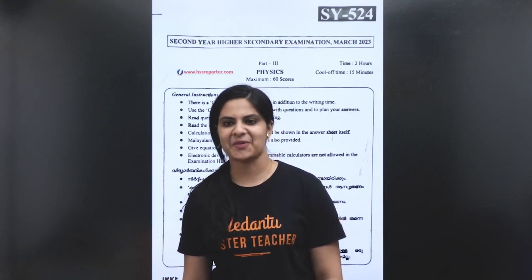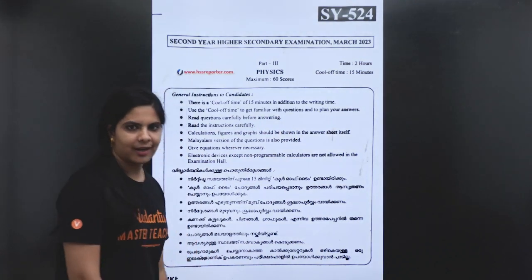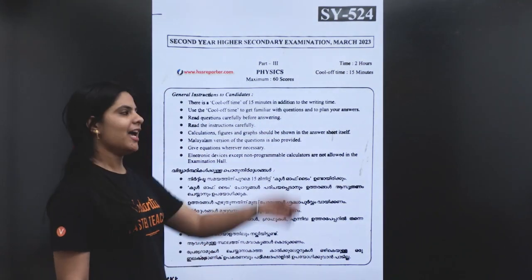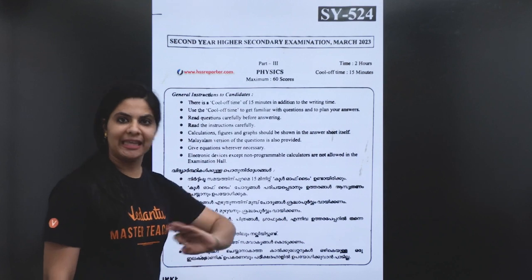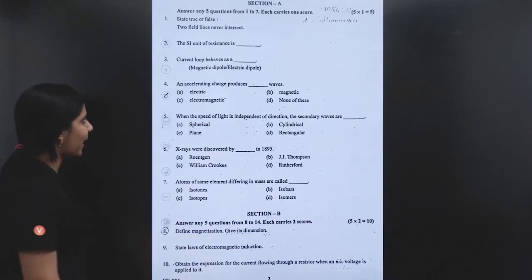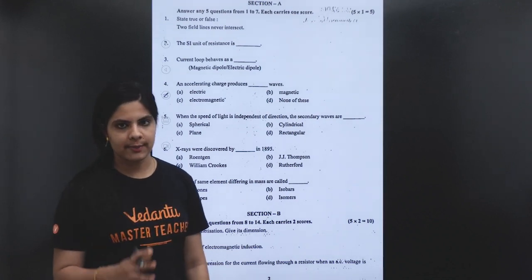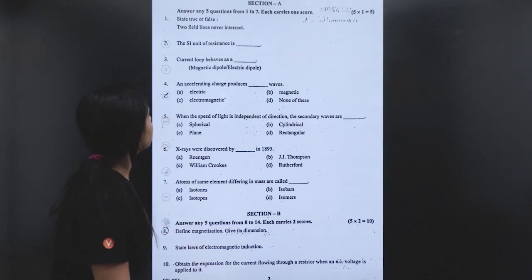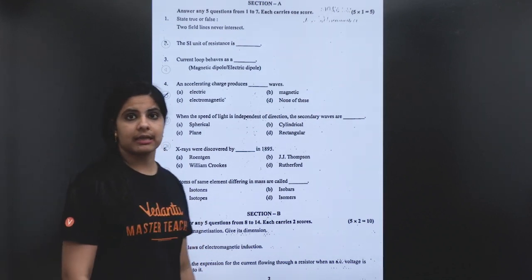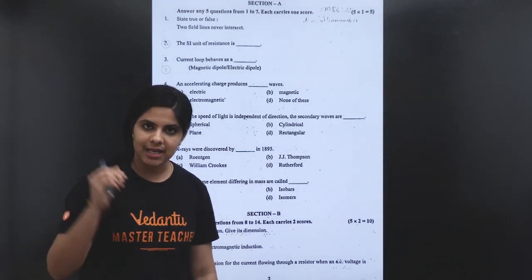We are doing a question paper solution. Since no question residency is an important solution, our children should be prepared. First question: state True or False — field lines never intersect.